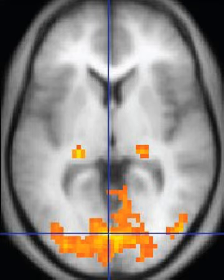Applications in the musculoskeletal system include spinal imaging, assessment of joint disease, and soft tissue tumors. Hepatobiliary MRI is used to detect and characterize lesions of the liver, pancreas, and bile ducts.